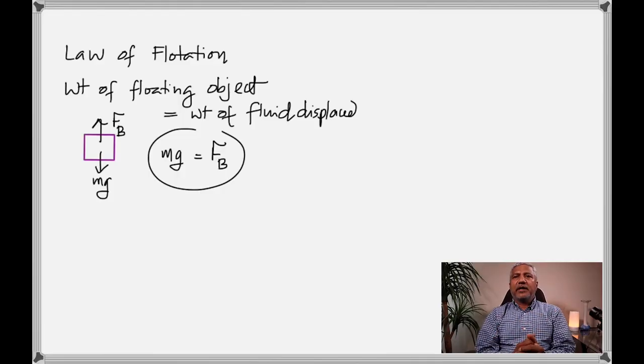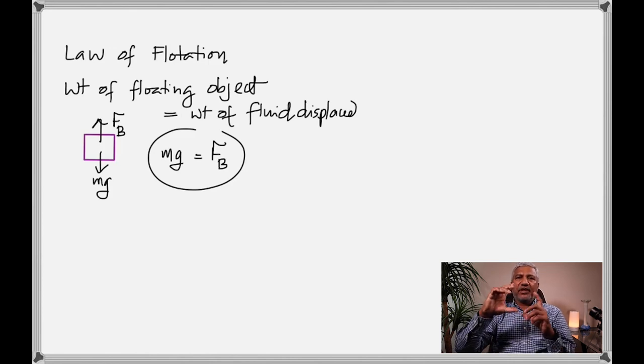The law of floatation states that the weight of a floating object equals the weight of the fluid it displaces. The buoyant force F_b acts upward and the weight mg acts downward; when they are equal the object floats.